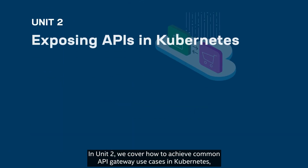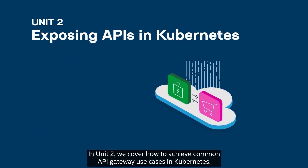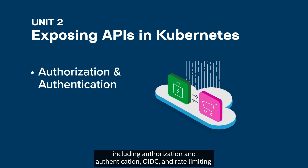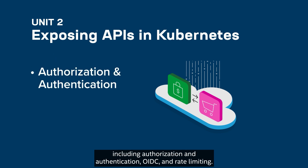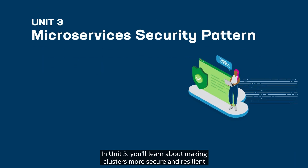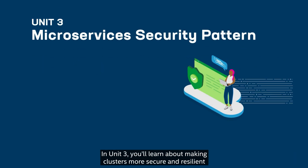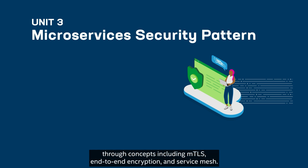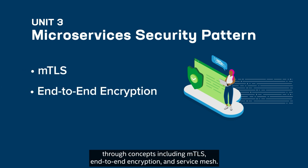In Unit 2, we cover how to achieve common API gateway use cases in Kubernetes, including authorization and authentication, OIDC, and rate limiting. In Unit 3, you'll learn about making clusters more secure and resilient through concepts including MTLS, end-to-end encryption, and service mesh.